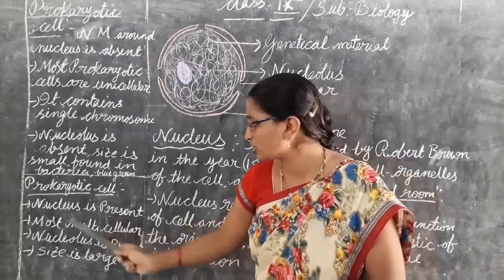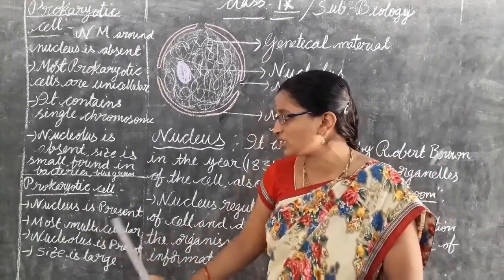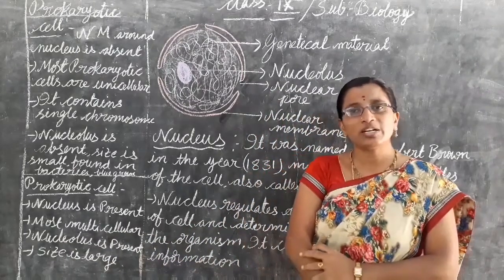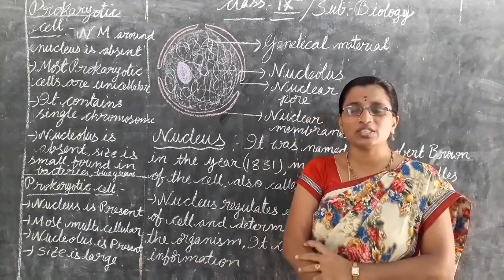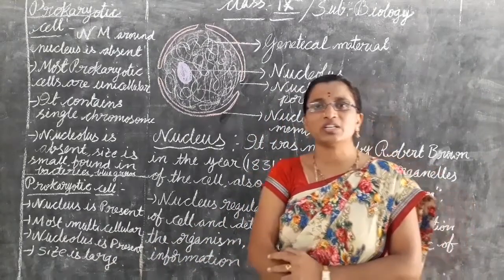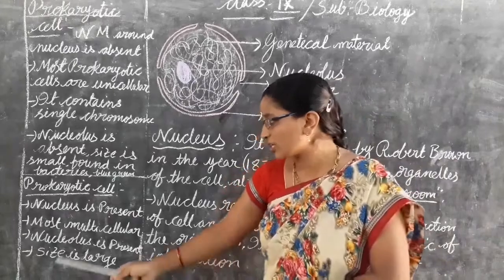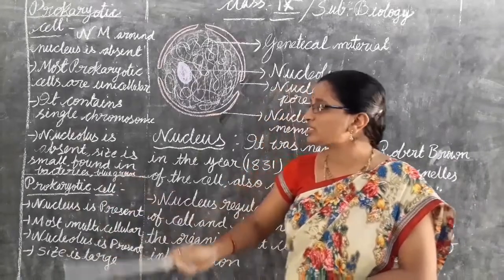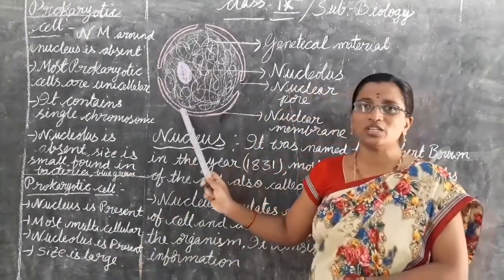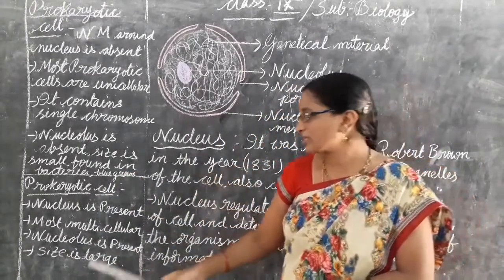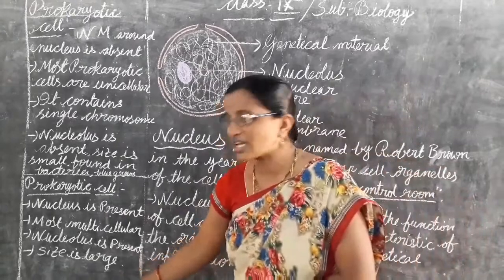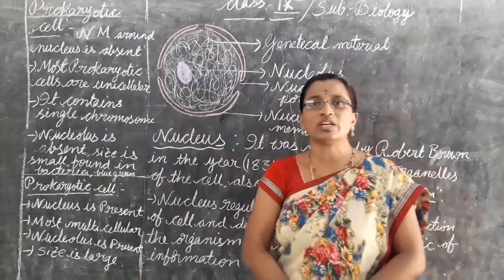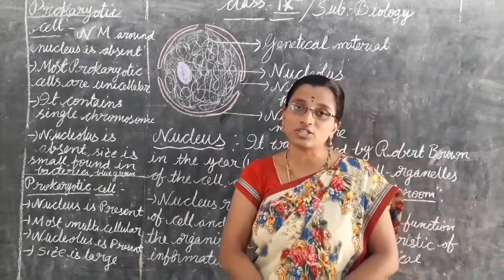In eukaryotic cells, a true nucleus is present. Eukaryotic cells are mostly multicellular organisms found in human beings, plants, etc. The nuclear membrane is present in eukaryotic cells and their size is larger compared to prokaryotic cells.